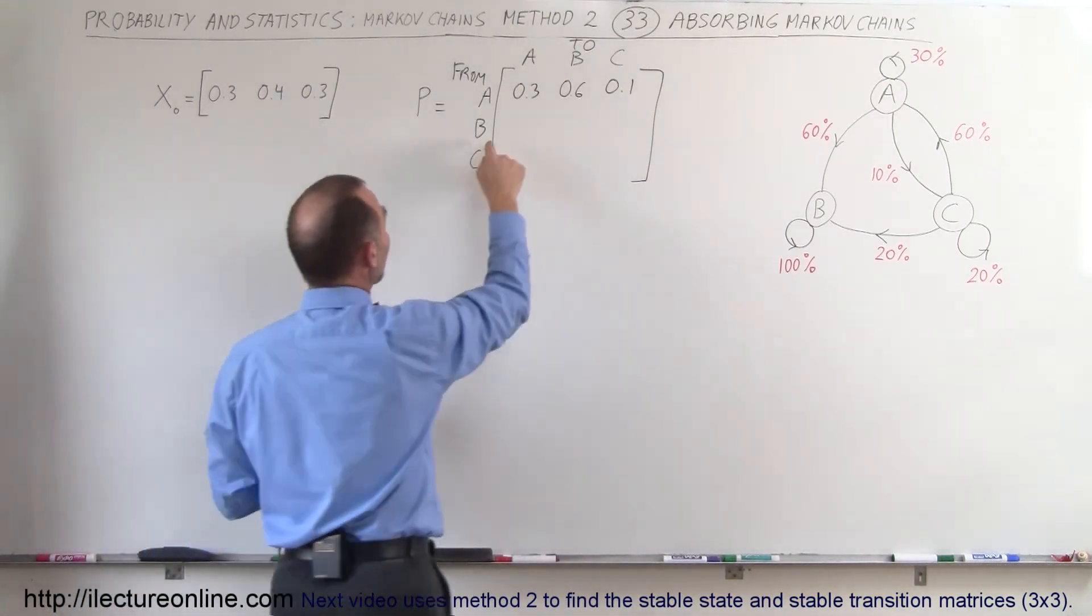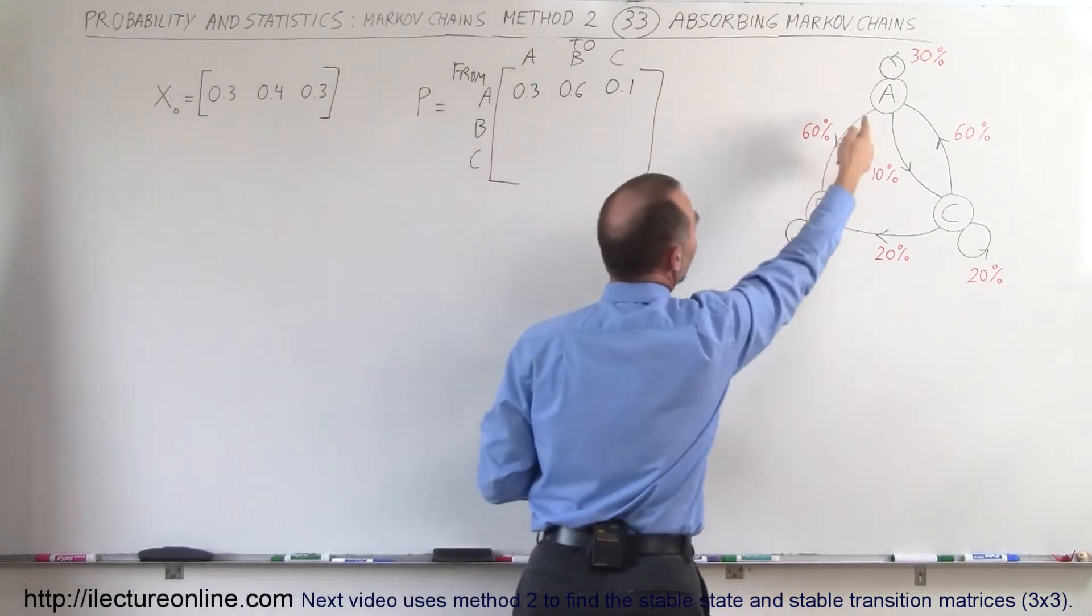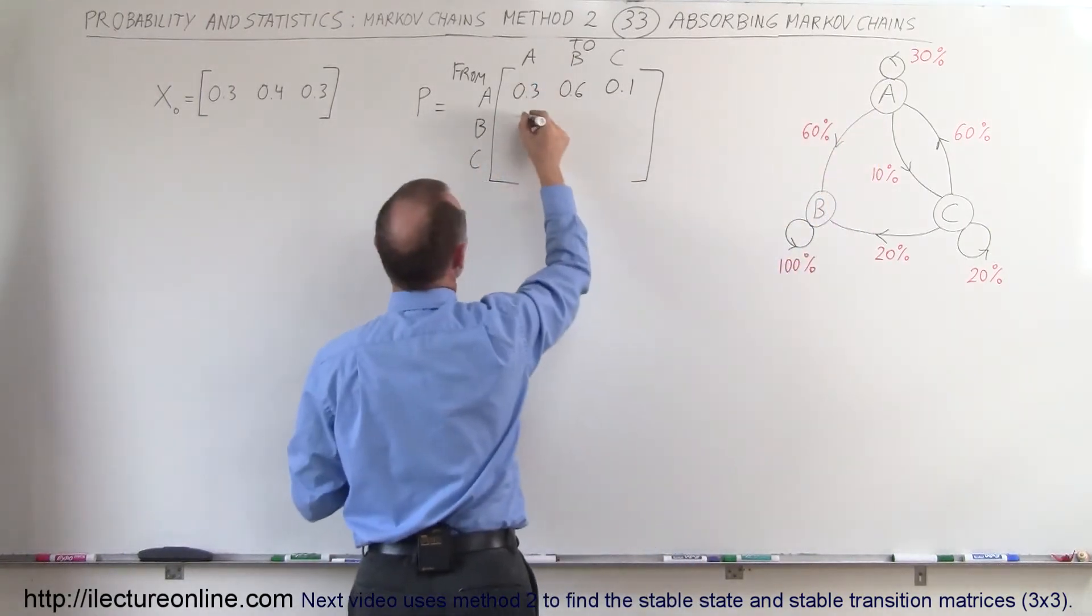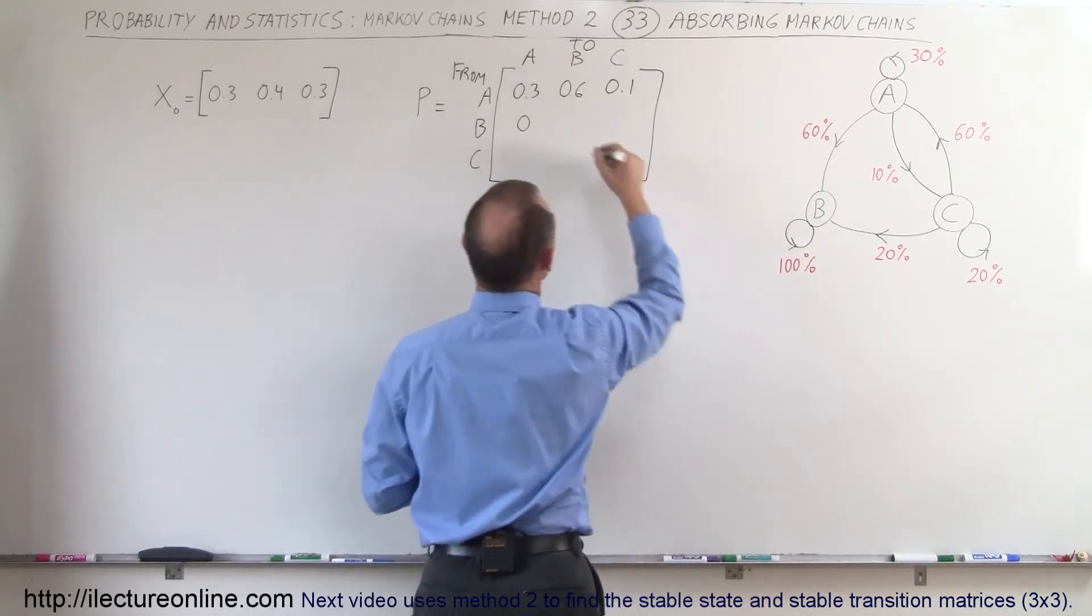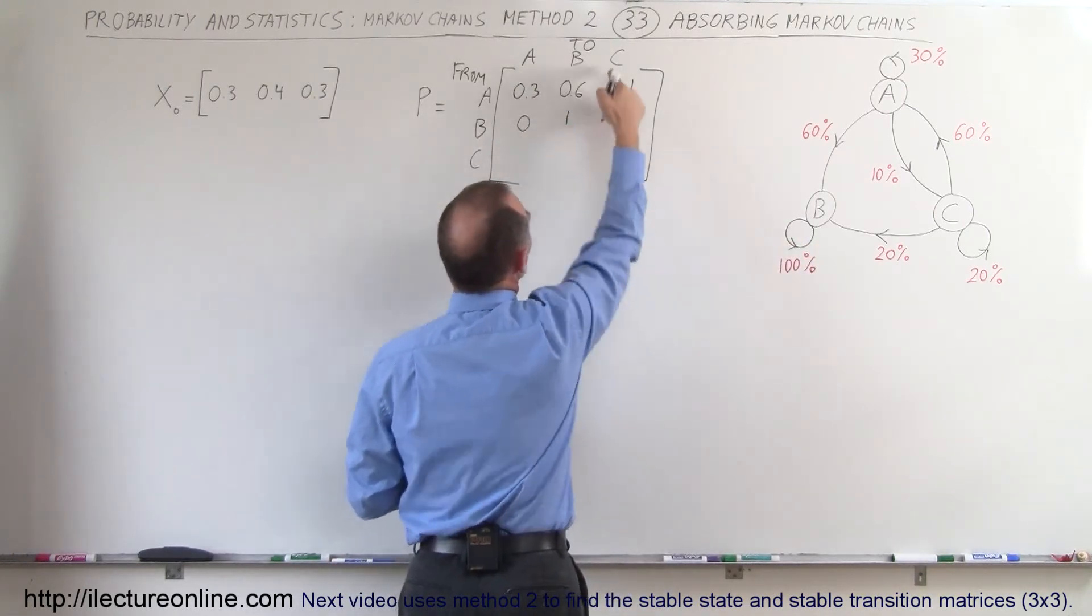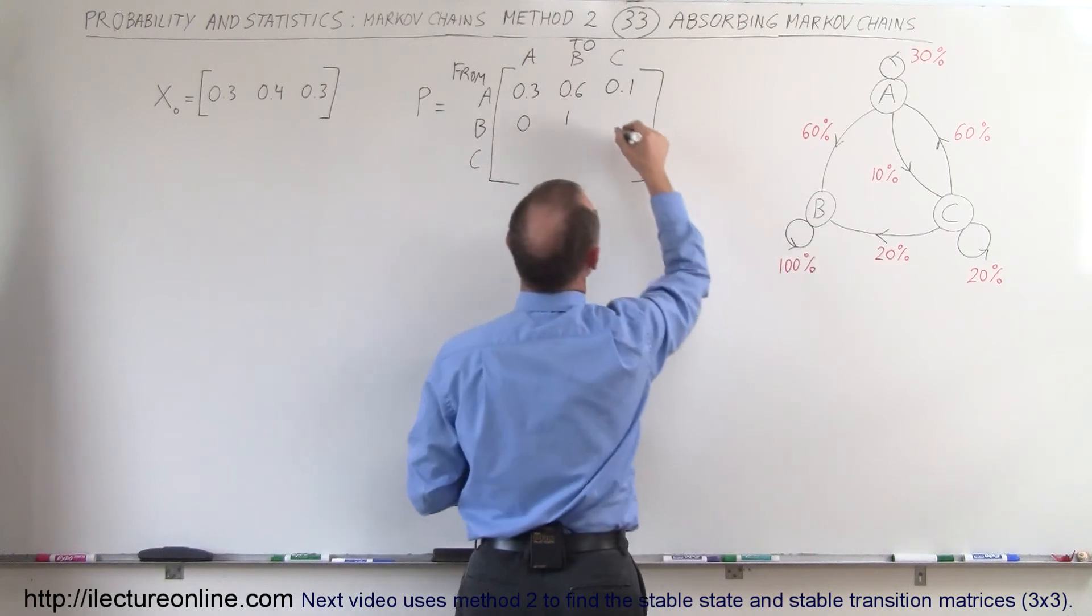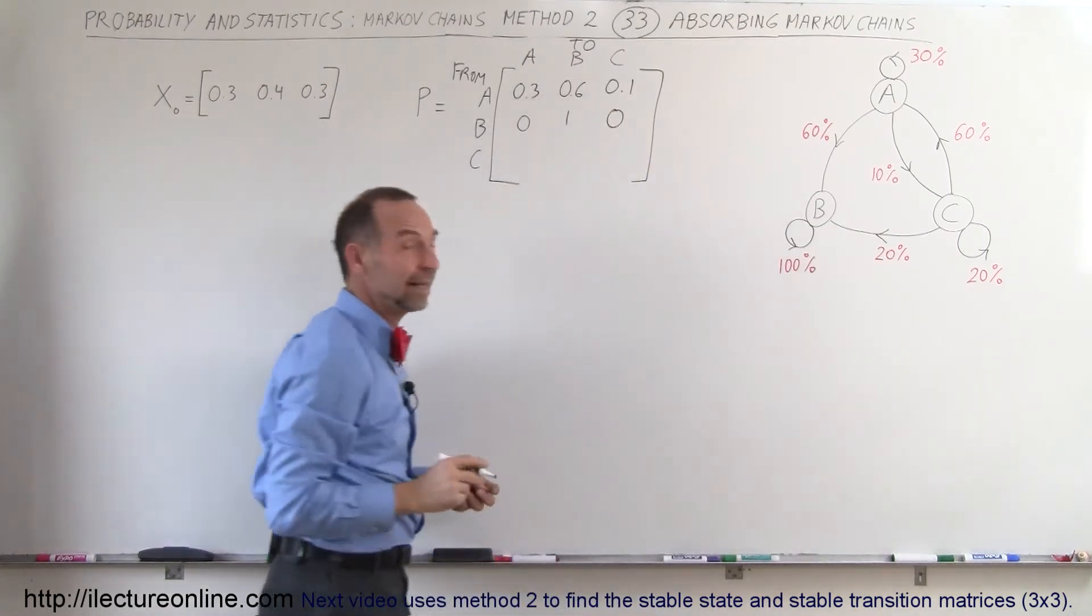Okay, now we go from B to A. From B to A there's 0%, so we put a 0 there. From B to B is 100%, so we put a 1. And from B to C we have 0, no customers going back to C. And then finally,